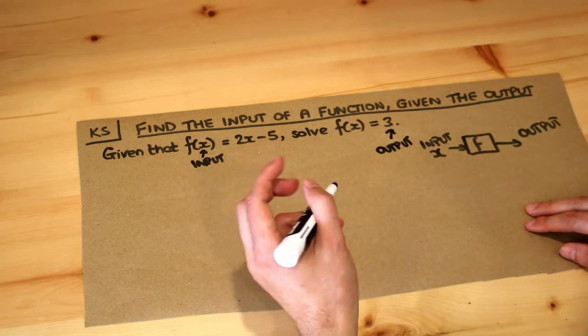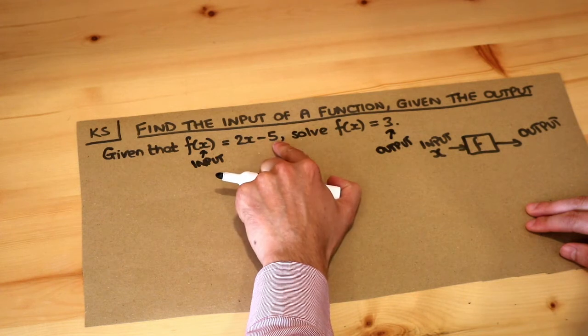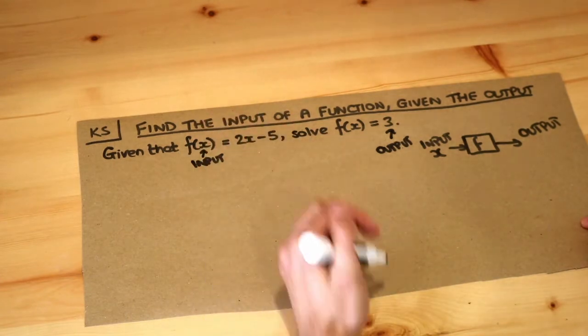Now we could sometimes do it in our head. If we know the input is multiplied by 2 and then subtract 5 to get 3, you could work your way backwards. So you could add 5 and divide by 2.